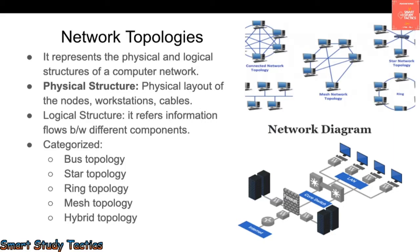Network topology has two parts. Number one is the physical structure — the physical layout of the nodes, workstations, and cables, meaning how to place the computer systems, server, and cables. Second is the logical structure, which refers to information flow between components — how easily your information will move from one place to another.